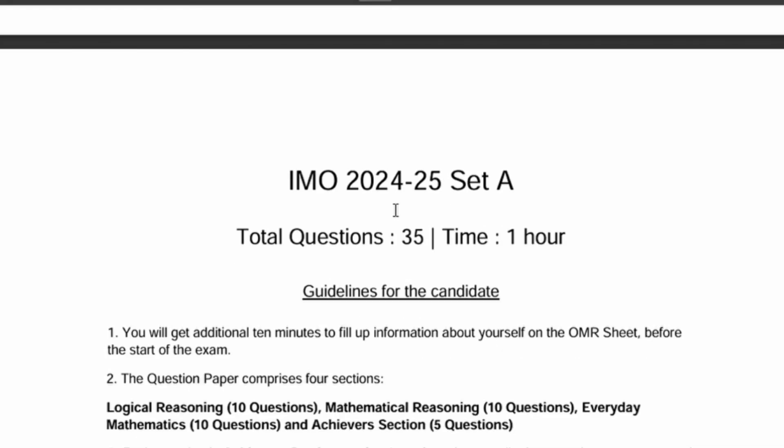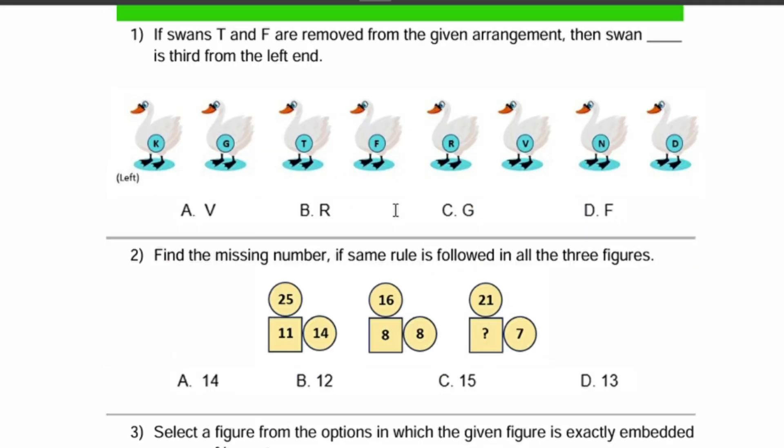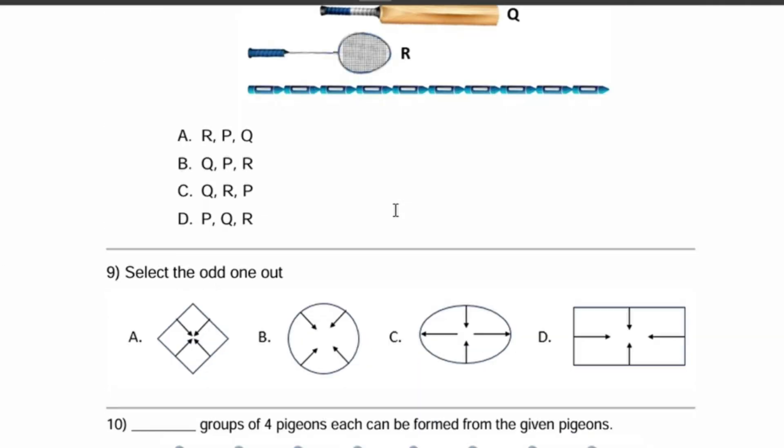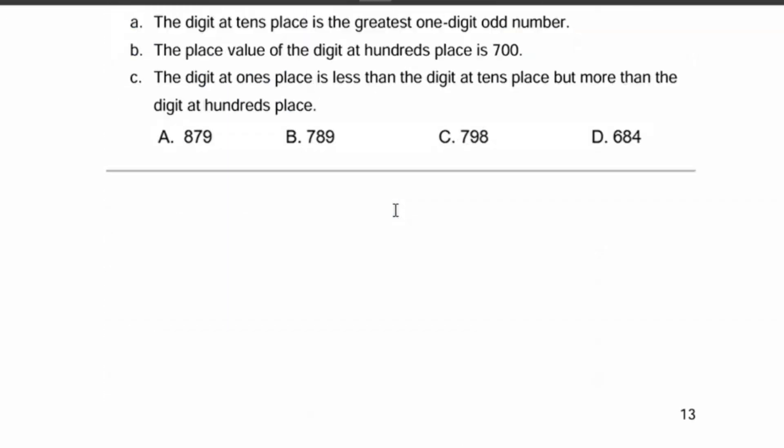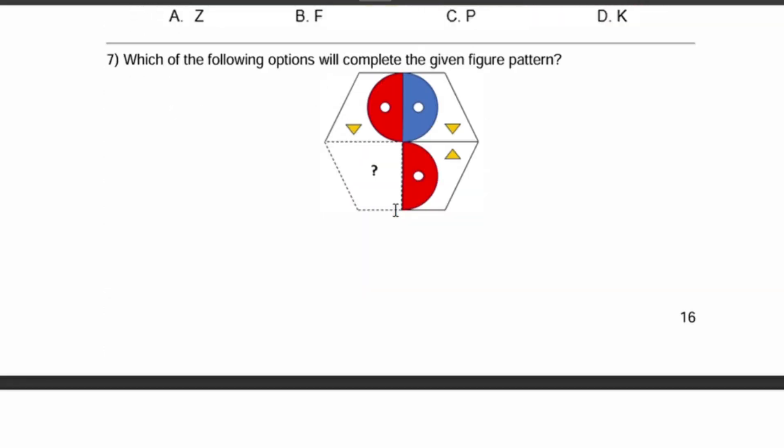But before we go to the problem, I just need a couple of seconds with your parents. So dear parents, if you want your child to ace the olympiad examination, the best way to do is practice, practice, and practice. And what better way to practice than previous year question papers. If you wish to purchase 18 previous year olympiad question papers, you can check the description box. You'll find the link and you will get these 18 papers just for rupees 89. Now let's get back to the video.